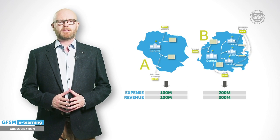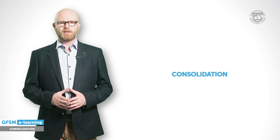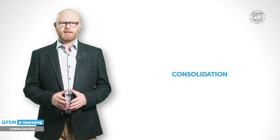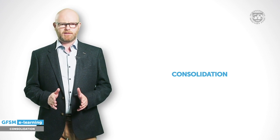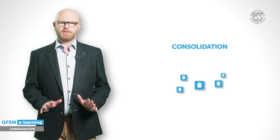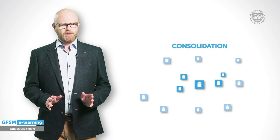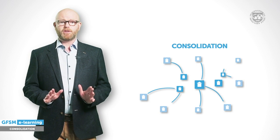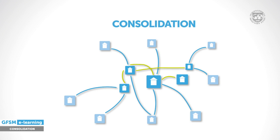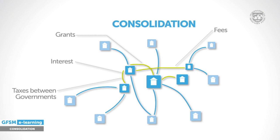This brings us to a general point in compiling fiscal statistics: consolidation — the process by which all government units are combined and presented as a single reporting sector. The general government and public sectors are typically composed of many different institutional units, which are engaged in transactions with units in other sectors and frequently between each other. Transactions among government units can, for example, be one-off or periodic grants, interest payments, or fees and taxes between government levels, such as motor vehicle taxes a ministry has to pay.